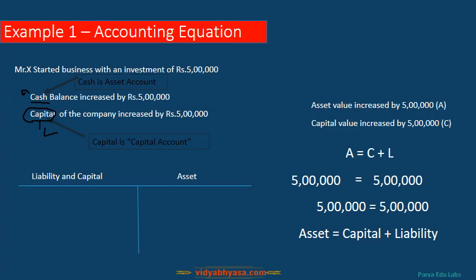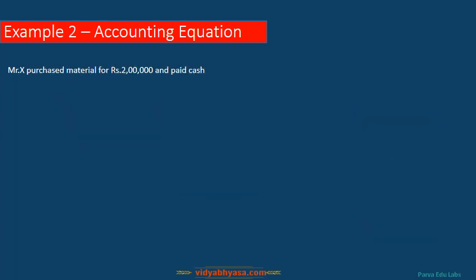Looking at how this appears on the balance sheet: cash is increased by 5 lakhs on the asset side, and capital is increased by 5 lakhs on the liability and capital side.